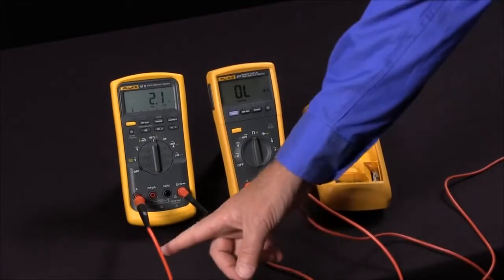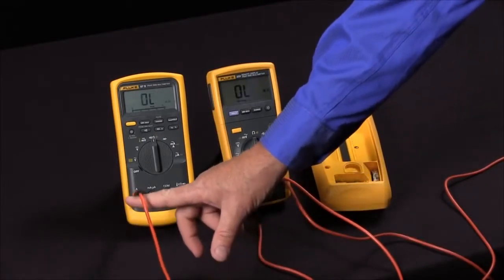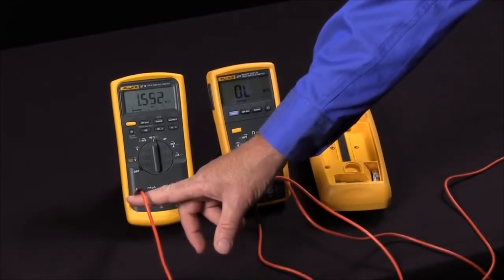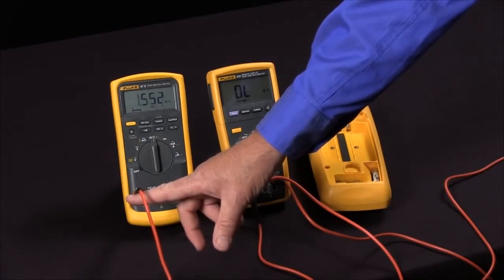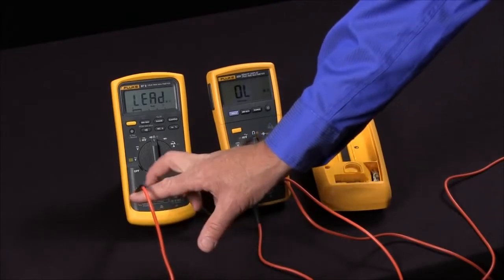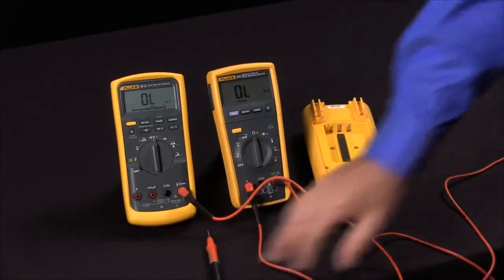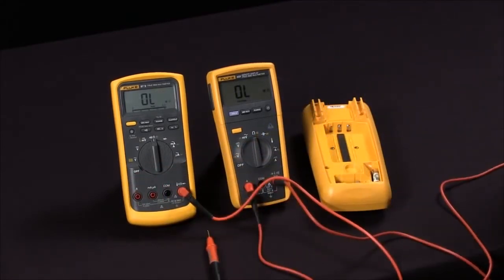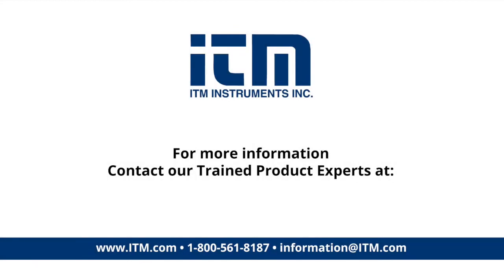One thing nice about the Fluke 87 is they have this lead alert function, so if you're trying to take a measurement with the leads in the wrong jack, it will actually give you an indication. This is also an indication that your fuses are okay. So this is a way that you can test the fuses within your multimeter without having to open the case.